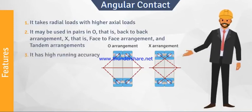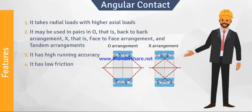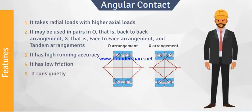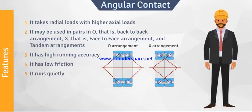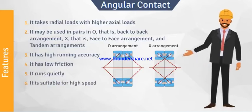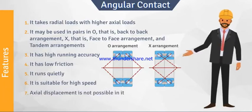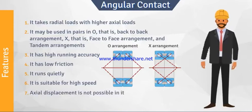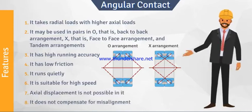Third, it has high running accuracy. Fourth, it has low friction. Fifth, it runs quietly. Sixth, it is suitable for high speed. Seventh, axial displacement is not possible in it. And lastly, it does not compensate for misalignment.